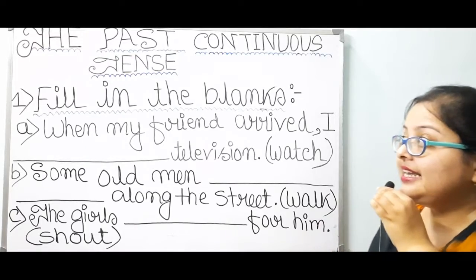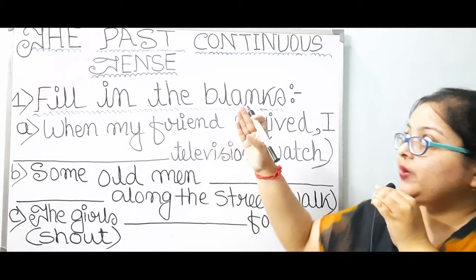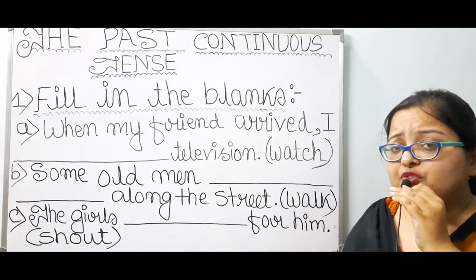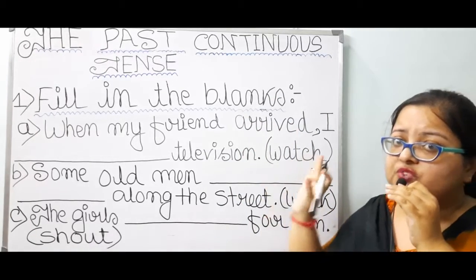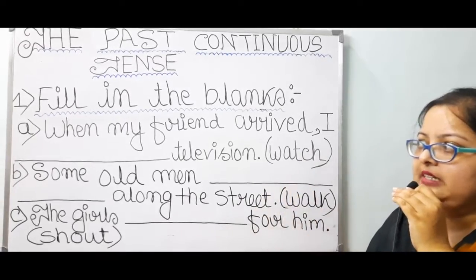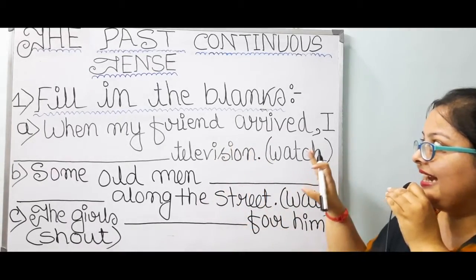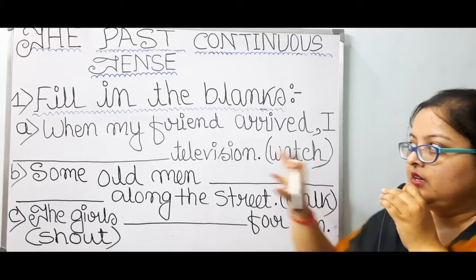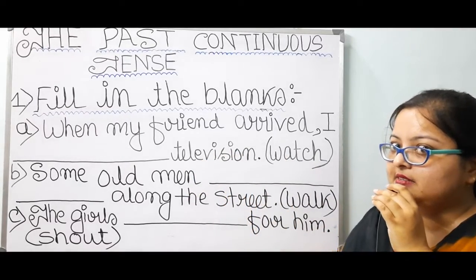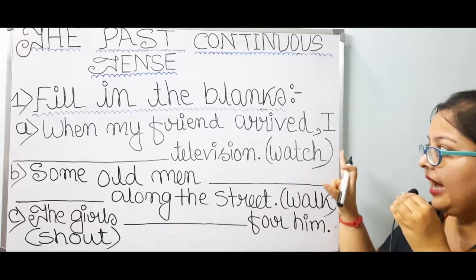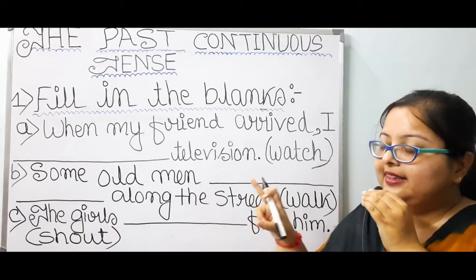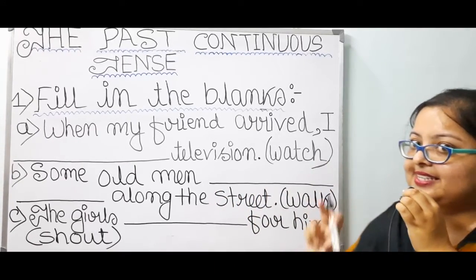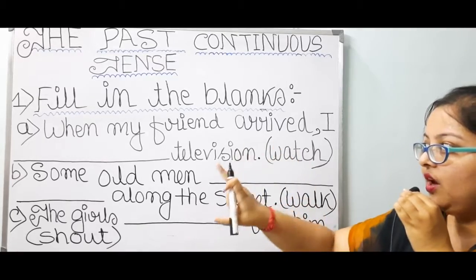Next, let us solve another exercise with the past continuous tense. Number 1, fill in the blanks with suitable forms of verbs. Number A: When my friend arrived, I dash television. Was watching is correct. With 'I', 'was' is used. Then, first form of verb plus -ing: watch + ing = watching. So, was watching.